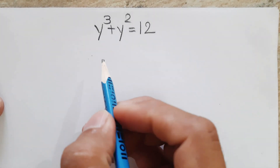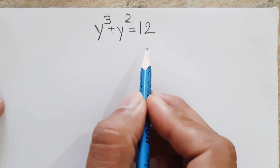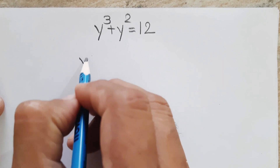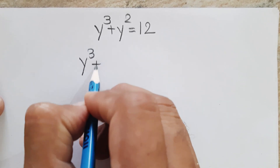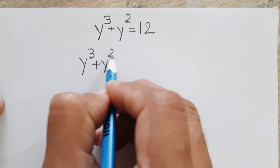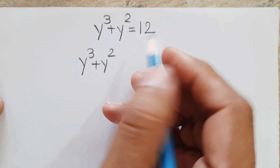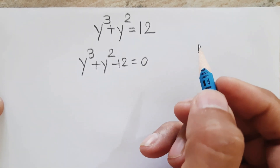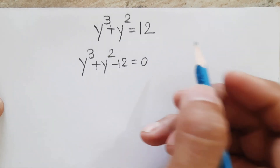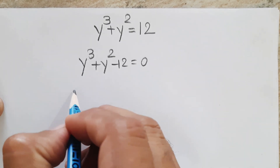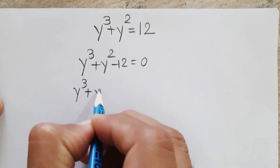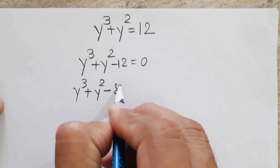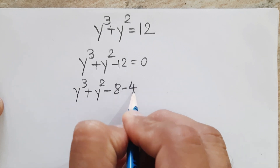Hello friends, welcome. Let's solve this problem — we have to find the value of y. Given is y³ + y² = 12. We will take this 12 to the left-hand side to simplify and factorize the equation. We will write -12 as -8 - 4.